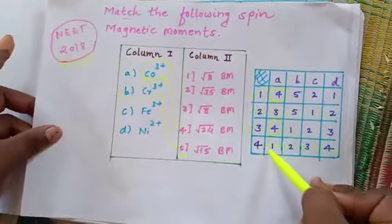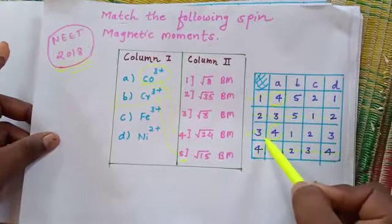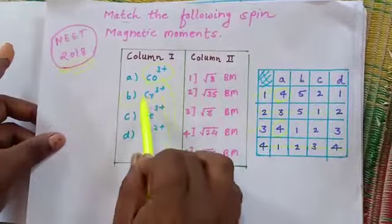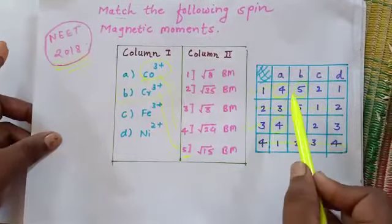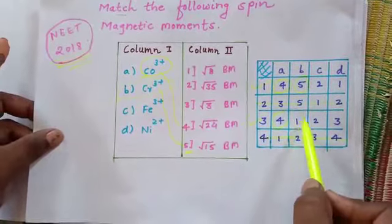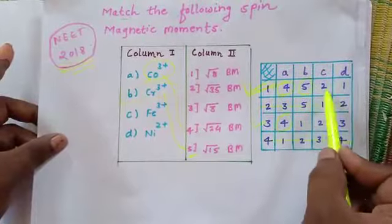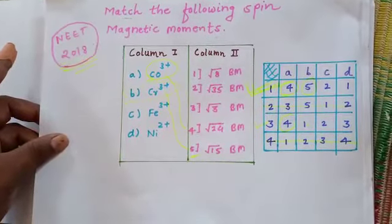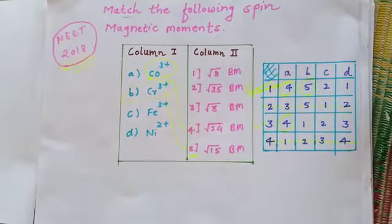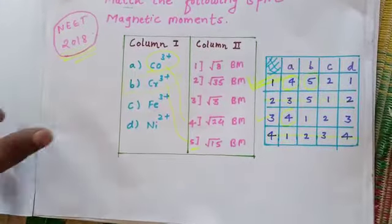So you can see here, 2 and 4 are ruled out, that's not possible. We have to check 1 and 3. So for B it's 5, for B it's 5, that is first. And here for B it's 1, which is impossible. So first is your correct answer. Okay, so such questions come in NEET 2018. You can say they come in NEET. This NEET 2018 question we have seen.